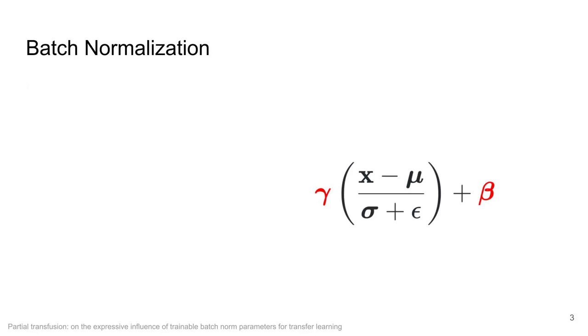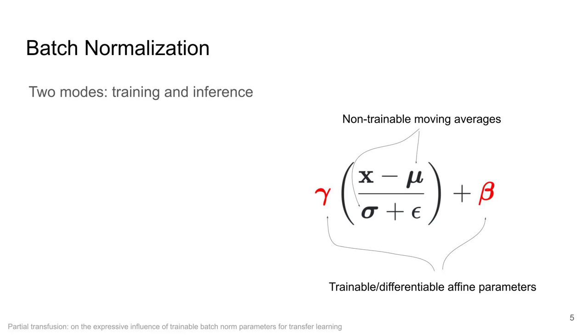Most modern convolutional neural network architectures contain batch normalization layers. The layer is composed of trainable affine parameters gamma and beta and non-trainable parameters that are moving averages of the mean and standard deviation. The presence of the non-trainable parameters means that the layer operates in two different modes depending whether it is in training or inference.